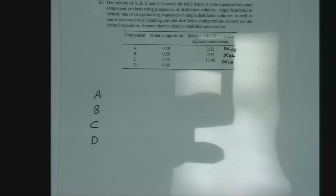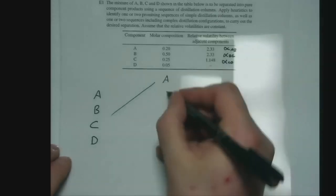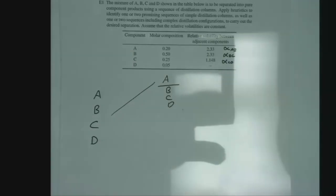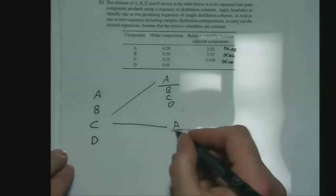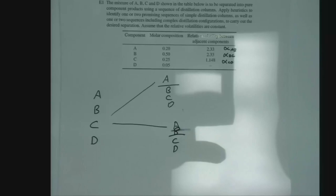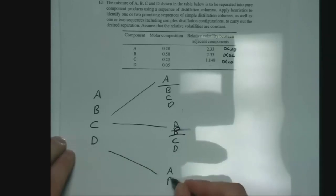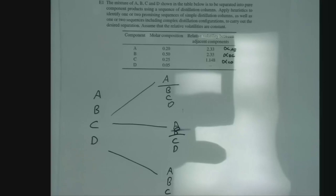So what we have to do is separate these four components. In our first distillation column, we have only three potential separations we can make using simple distillation columns: we can split between A and B, between B and C, or between C and D.